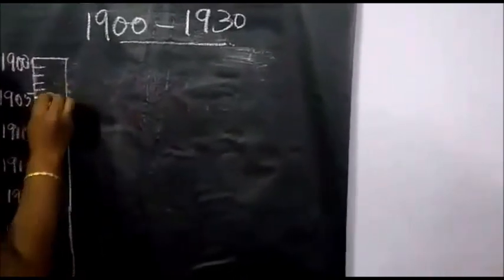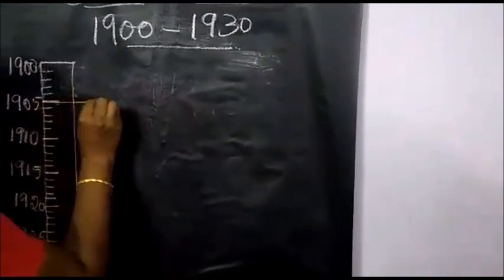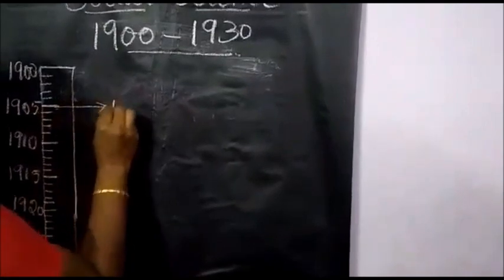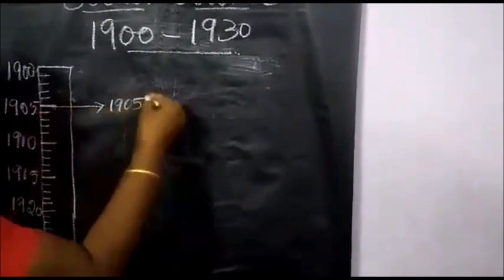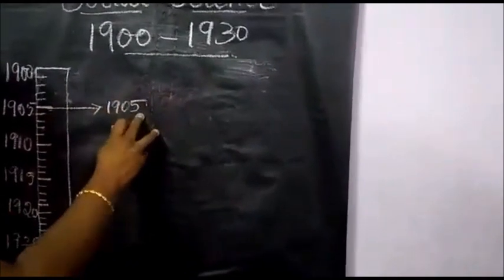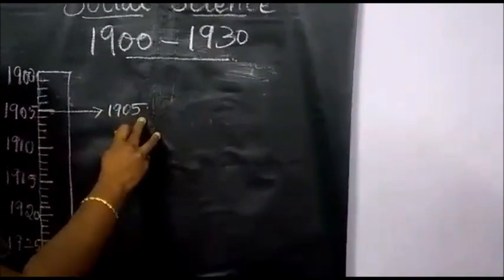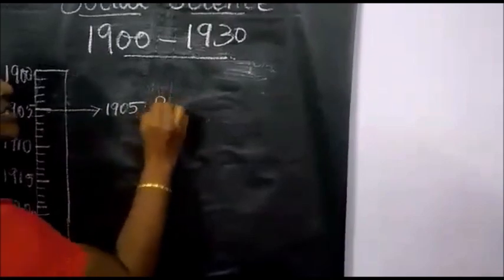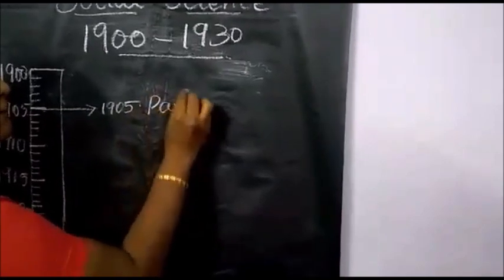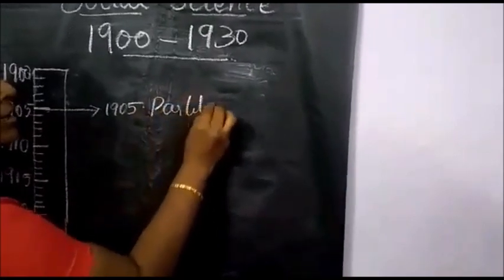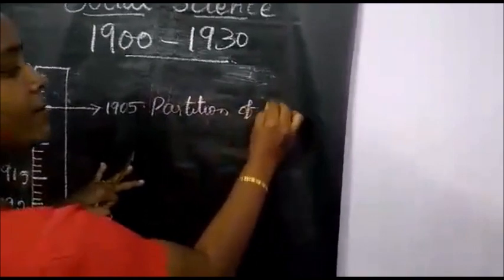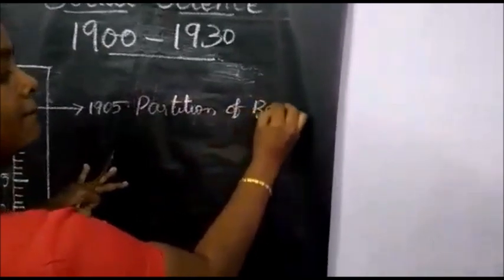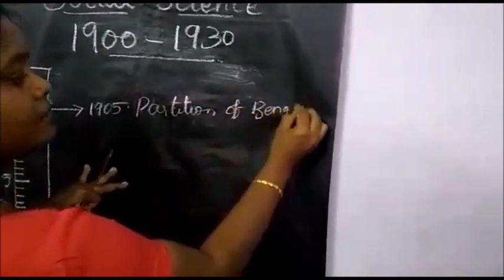For example, the first event is 1905. What is the event of 1905? Partition of Bengal.